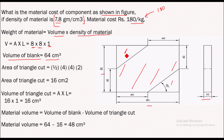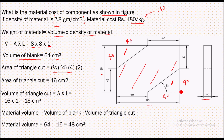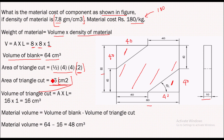Now we'll find the volume of the triangular cut. To find the volume we first need the area of the triangle. Area of the triangle is half base into height. Each side is 40 mm, and we have two identical triangles, so we multiply by two. Half into base 40 mm (4 cm) into height 40 mm (4 cm) multiplied by 2 gives us an area of triangular cut equal to 16 centimeter square.